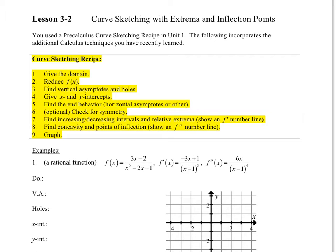So we're going to incorporate our calculus topics into our curve sketching. If we start off by looking at this curve sketching recipe, we have the following steps. These first six, mainly the first five, we've done in pre-calculus. Now we're going to enter into steps seven and eight: finding when a function is increasing, decreasing, and the relative extrema, and also finding the concavity and points of inflection.